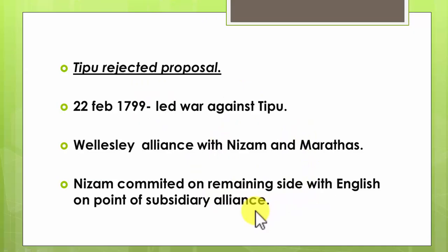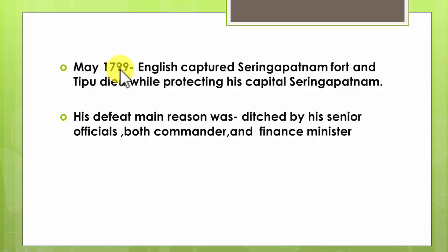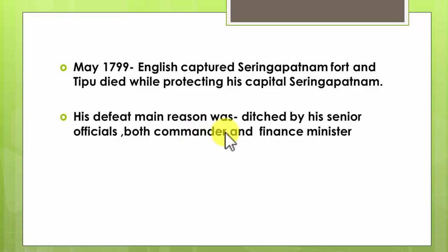Wellesley aligned with the Nizam and Marathas; the Nizam committed to the side of the English on the basis of subsidiary alliance. The three parties — Nizam, Marathas, and English — attacked Mysore from three sides. In May 1799, the English captured Srirangapatnam, the capital of Mysore. Tipu Sultan laid down his life while fighting, and this crowning victory made the English the masters of the state of Mysore.